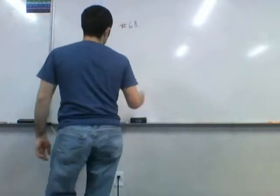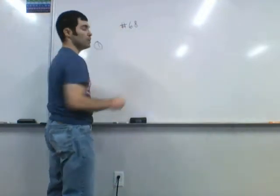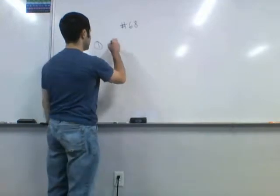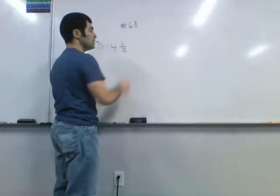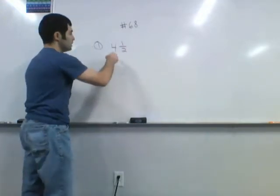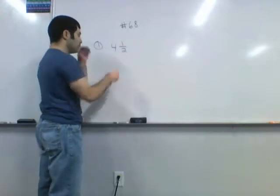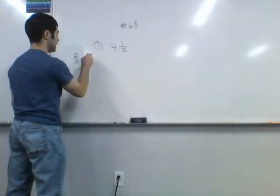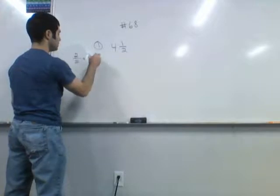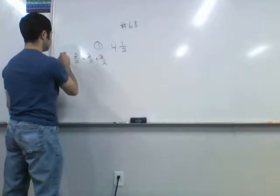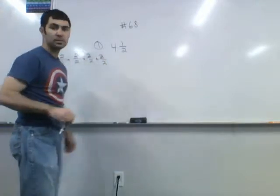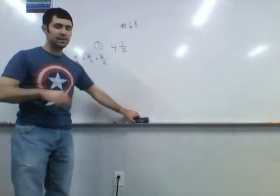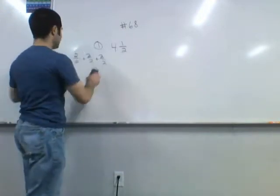Alright, real quick review. Number one, you have to know how to change a mixed number into an improper fraction. So I have four and one half. Four basically represents two halves plus two halves plus two halves plus two halves. You have the halves and the halves-nots — just kidding, that was a bad joke.